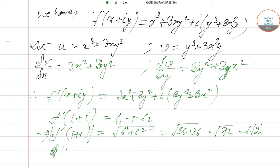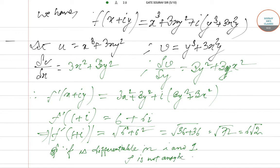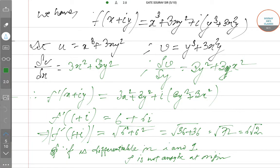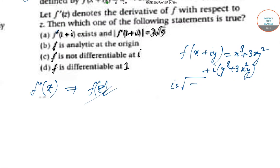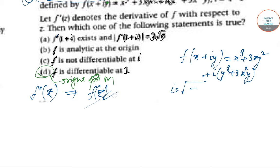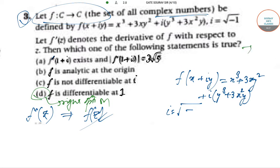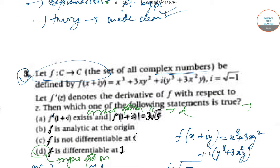So f is differentiable at z = 1. The function f is not analytic at the origin. Therefore, the correct option of this question is that f is differentiable at z = 1, which is option D. This is the full solution of this problem from GATE 2019.